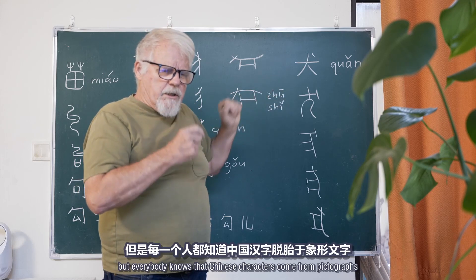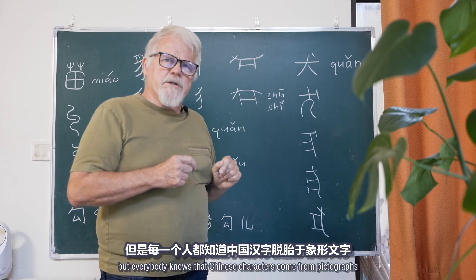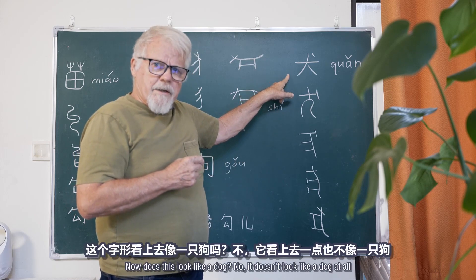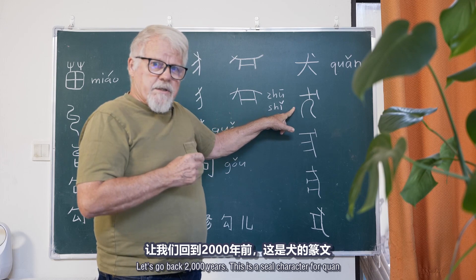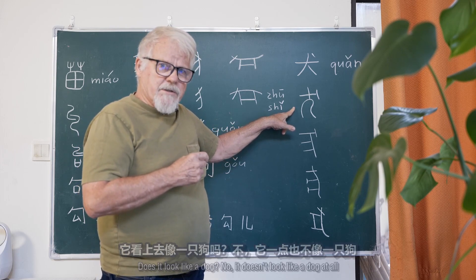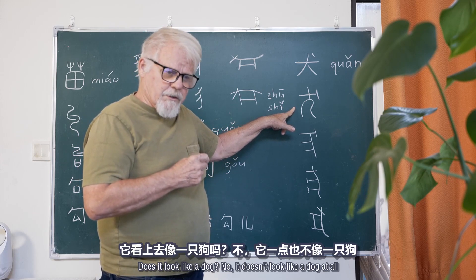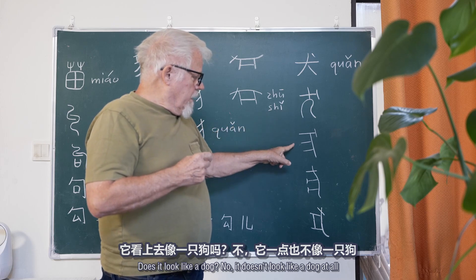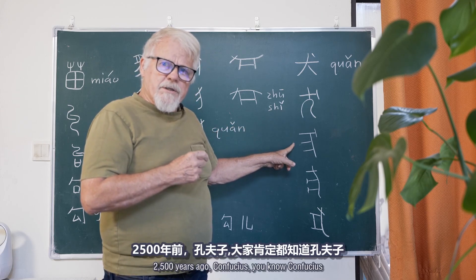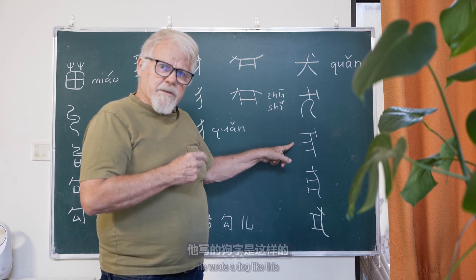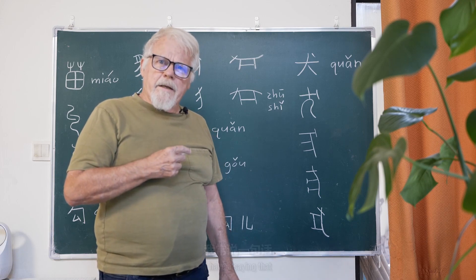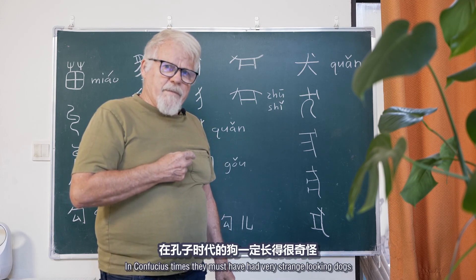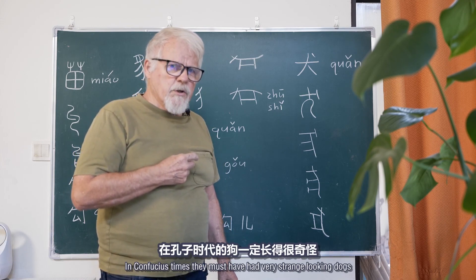Everybody knows that Chinese characters come from pictographs. Now, does this look like a dog? No, it doesn't look like a dog at all. Let's go back 2,000 years — this is the seal character for quǎn. Does it look like a dog? No. 2,500 years ago, Confucius wrote a dog like this. Does it look like a dog? No. So I have a saying that in Confucius' times, they must have had very strange looking dogs.